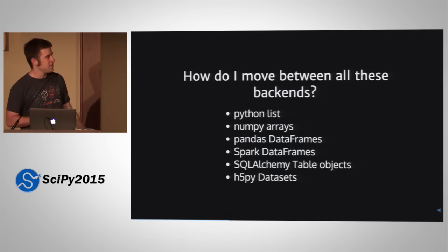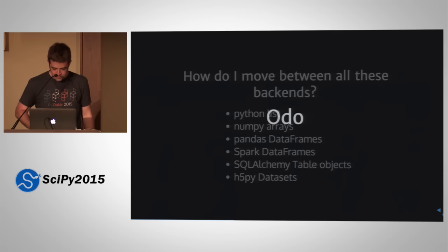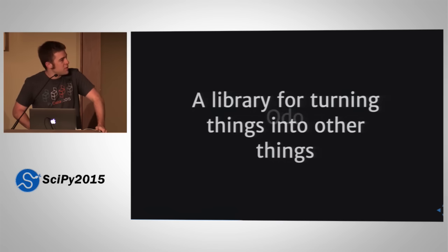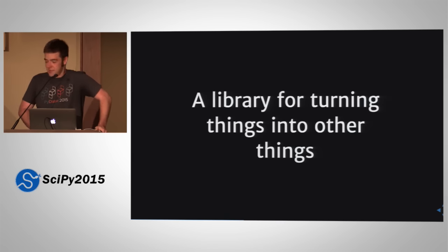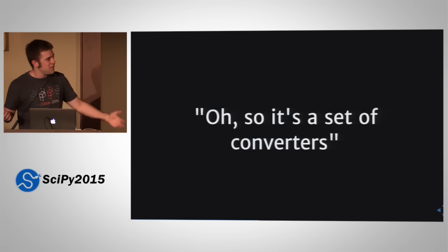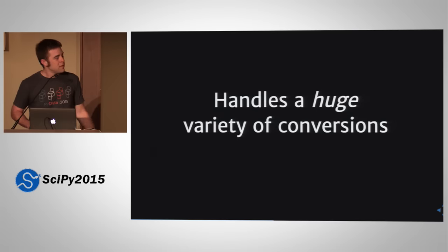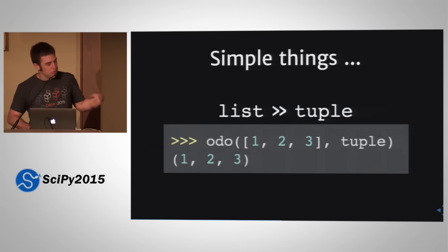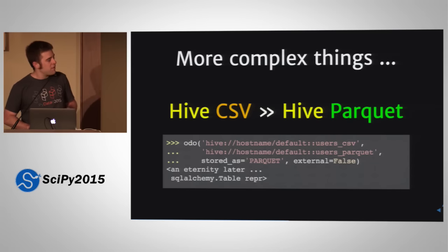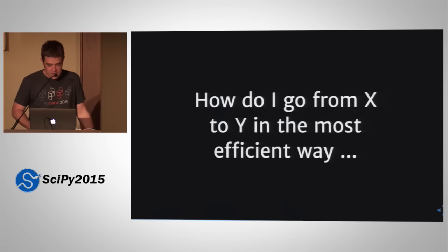So how do I move between all these backends? They all have different constructors. I want to dump my SQLAlchemy proxy of row proxies into a pandas data frame. Odo is a library that does this — it's a library for turning things into other things. It was removed from Blaze because it's useful on its own. Odo actually is a set of converters — it has a lot of different kinds. You can go from lists to tuples, from Hive CSV to a Hive Parquet file. It's sort of like CP with types, centered around tabular data. It allows you to go from X to Y in the most efficient way, without explicitly writing that down.